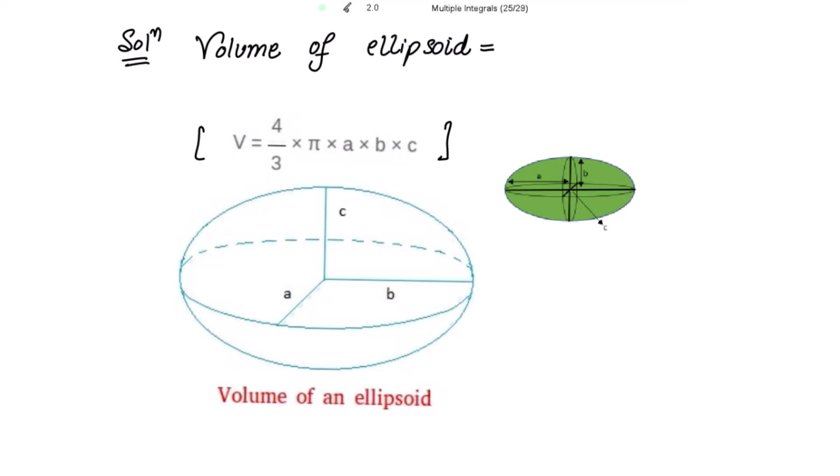Now if you look up over here, the volume of an ellipsoid is V equal to 4 over 3 times pi times abc. We have just proved this volume to be equal to this.